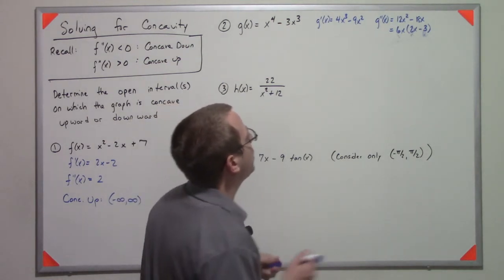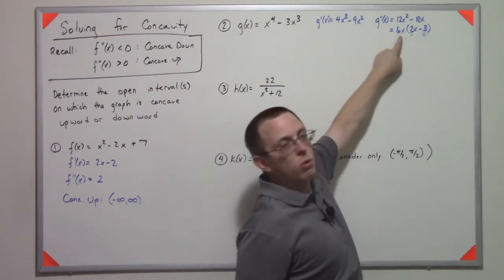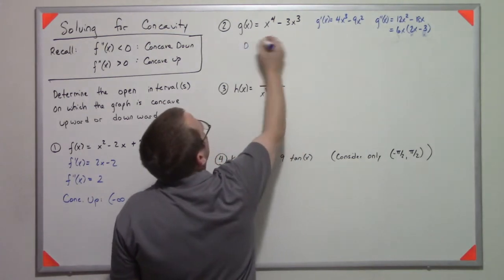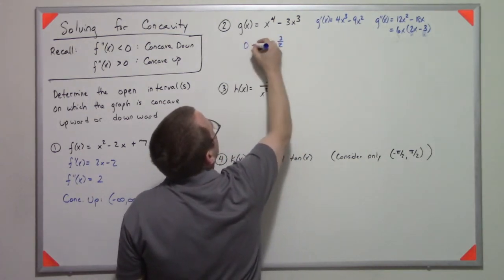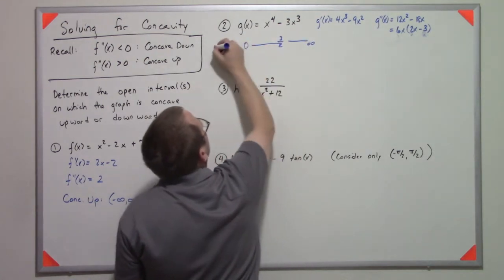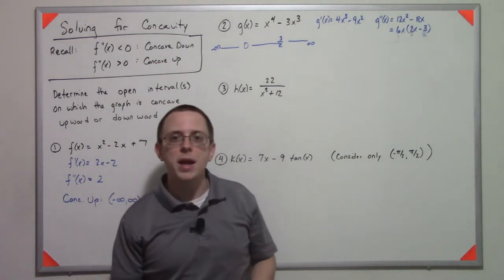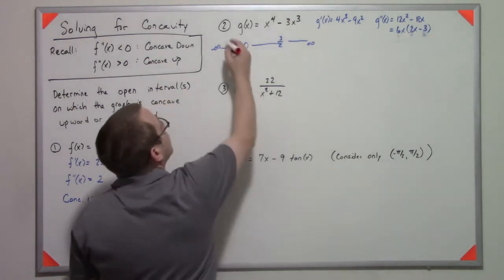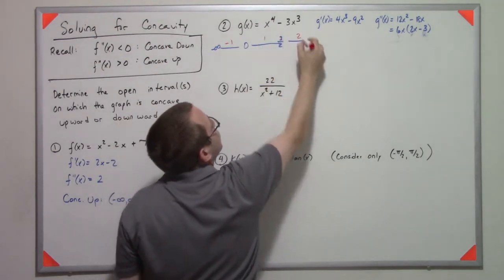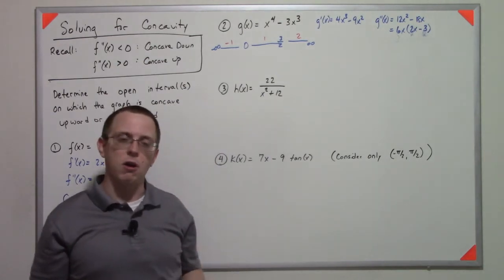This thing segments... It's 0 when x is 0, or when x is 3 halves. So we have 0, 3 halves. So we have positive and negative infinity. So all we have to do is pick random values. So let's do negative 1, 1, 2.